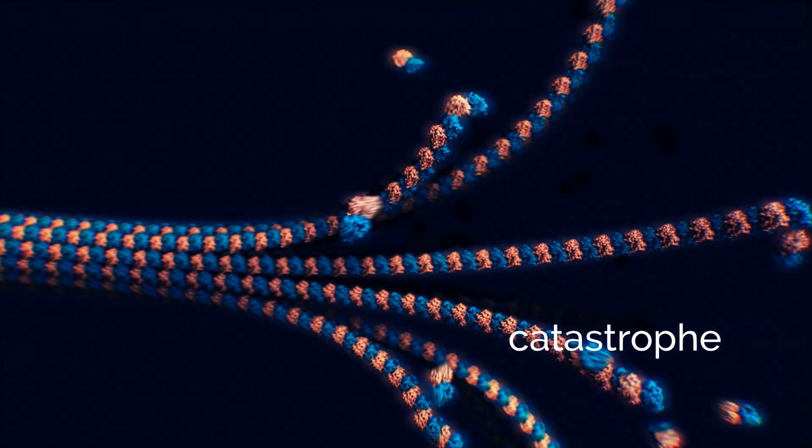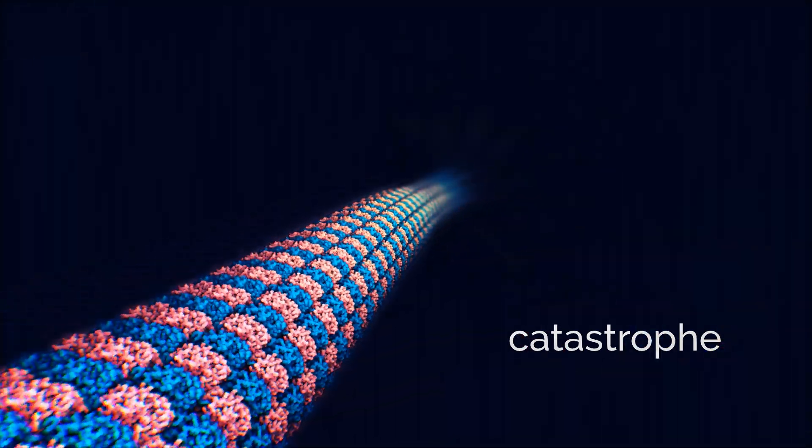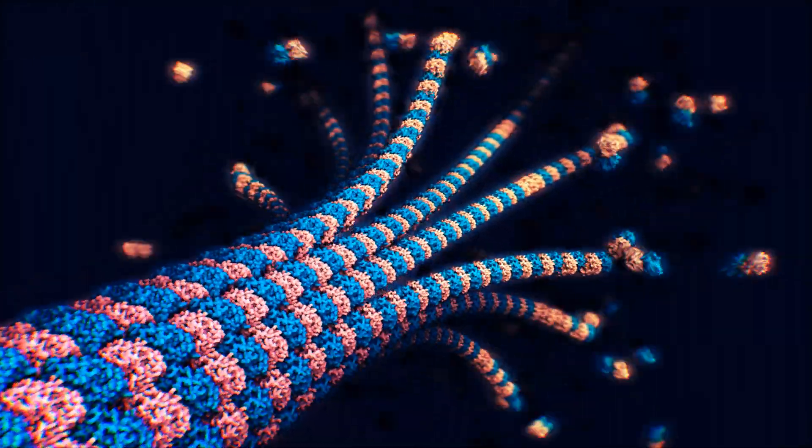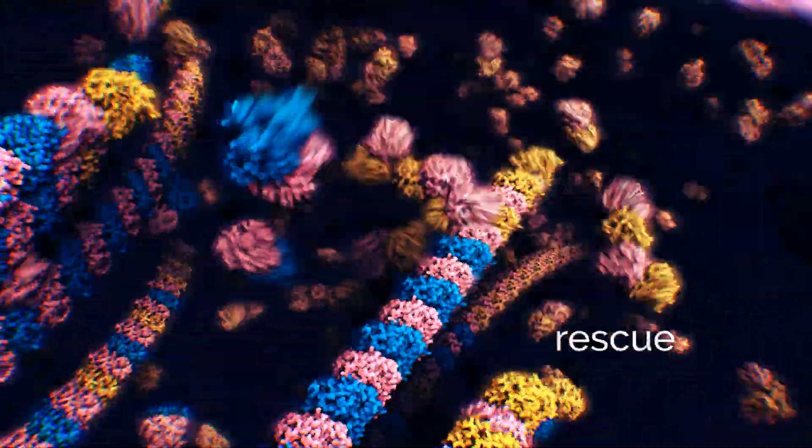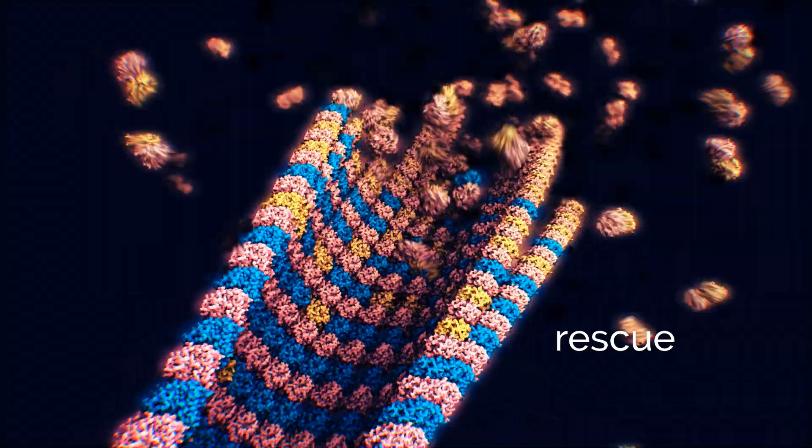This event is called a catastrophe, and at this point, the microtubule starts to break down. Shortly afterwards, the disassembly stops in an event called a rescue, and the microtubule starts to grow again.